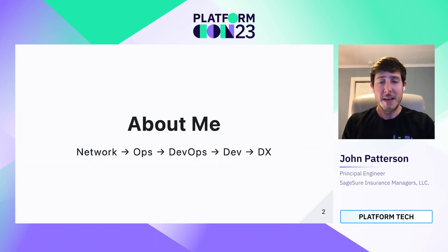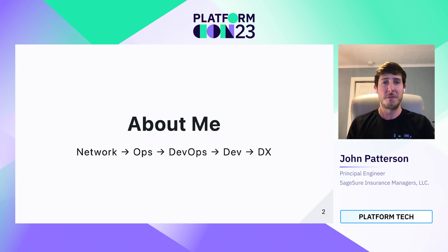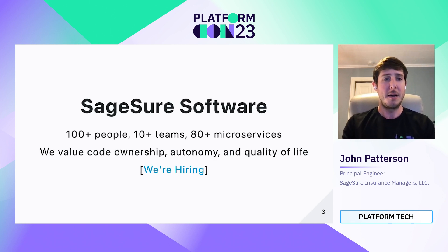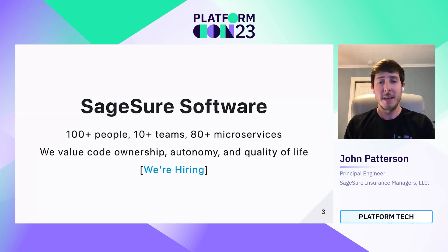Diving right in, a little bit about me. My name is John Patterson. I'm a network guy turned into an ops person, turned into a DevOps practitioner, turned into a full Java developer, and now I'm back doing what I love, which is creating tooling for devs on the DX team. I work at SageShure, which is a homeowner's insurance company. I've been here coming on eight years now.